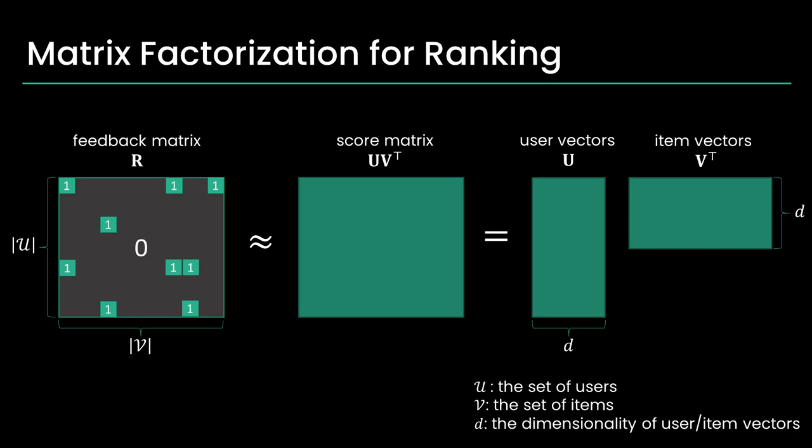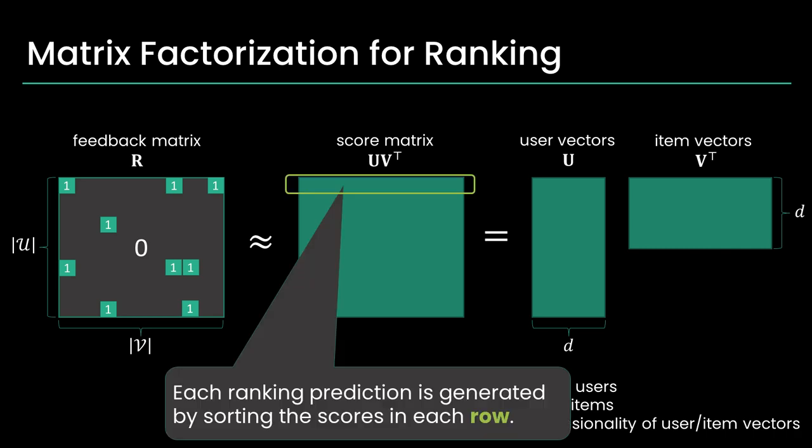This technique reconstructs the observed user-item feedback matrix by the multiplication of two low-rank matrices. Each row of the score matrix represents the predicted preferences of a user for items, and by sorting the scores within each row, we can generate a personalized item ranking for each user.